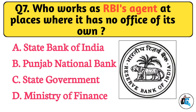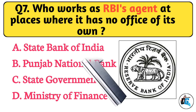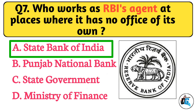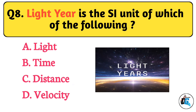Question No. 7. Who works as RBI's agent at the places where it has no office of its own? The right answer is Option A: State Bank of India.